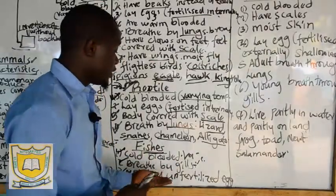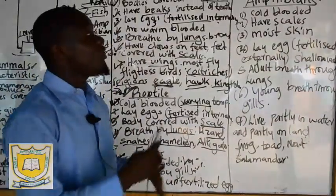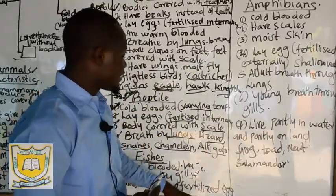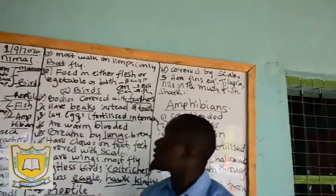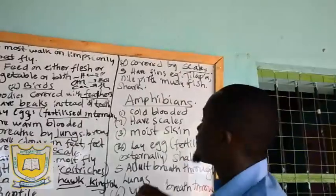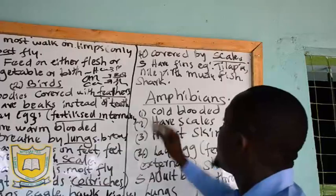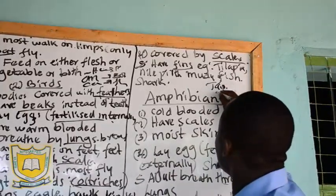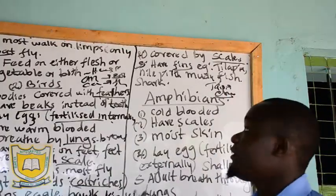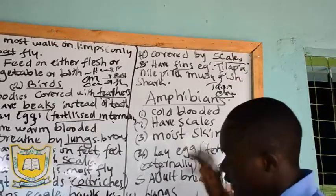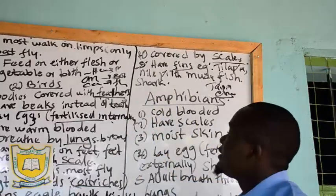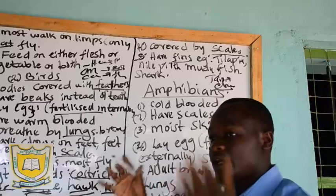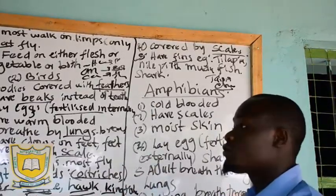Number four: their bodies are covered with scales. Number five: fish have fins. There are different types of fins such as the tail fin and the dorsal fin, each with different functions. The general function of fins is to aid movement — moving from one place to another — and also to prevent the fish from rolling over and to help with turning in water. Examples of fish include tilapia, Nile perch, mudfish, and shark.